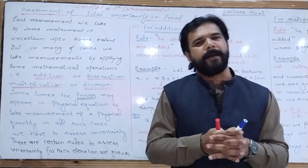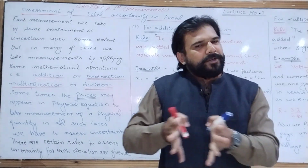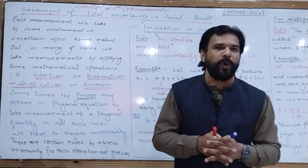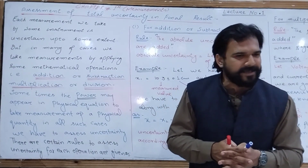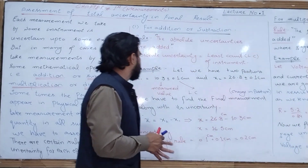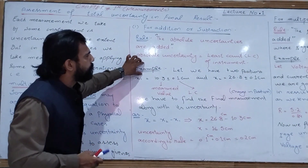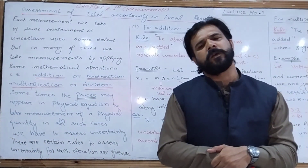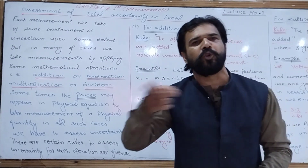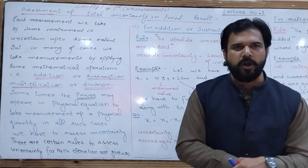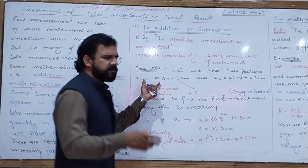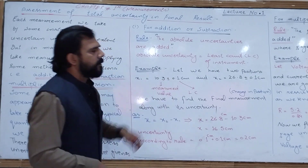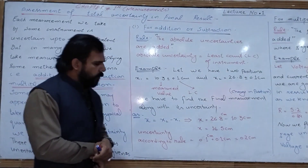To understand this rule, we will take an example. We have two positions of an object. The position x1 is equal to 10.3 ± 0.1 cm.